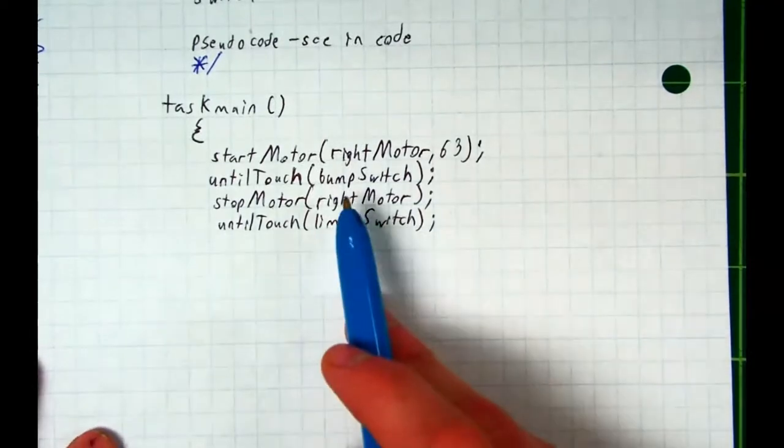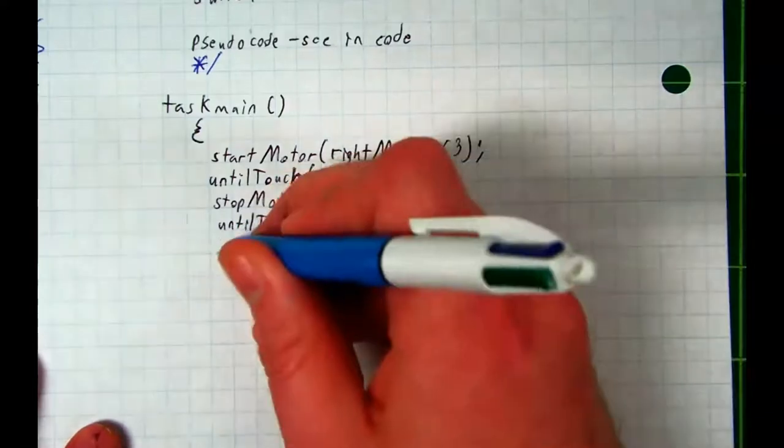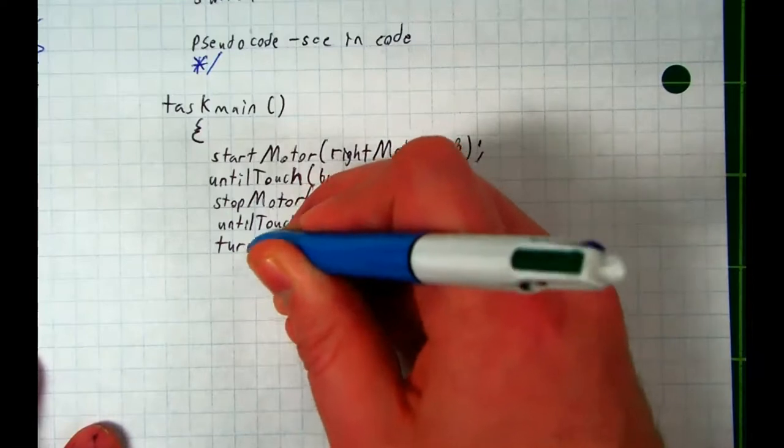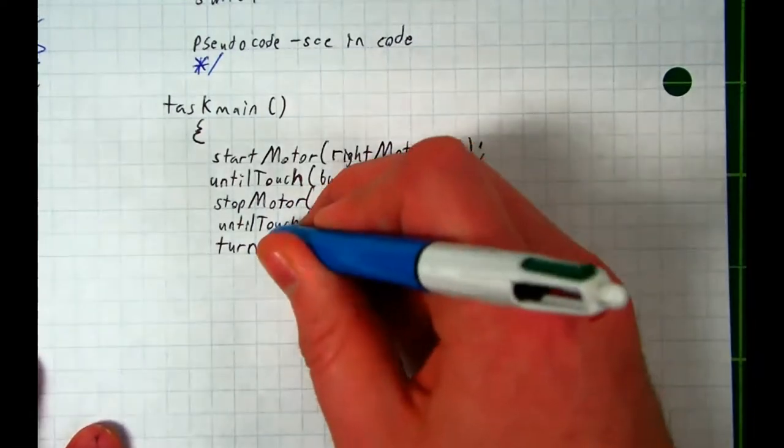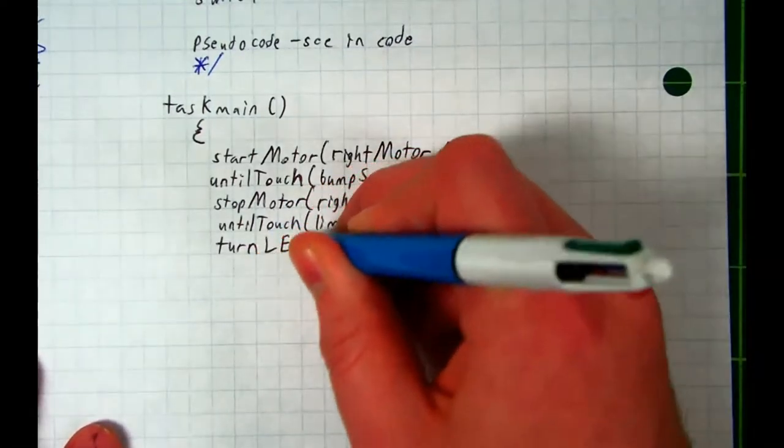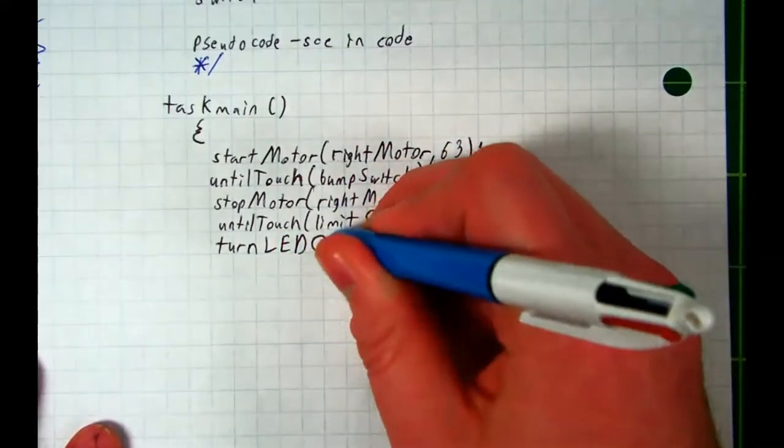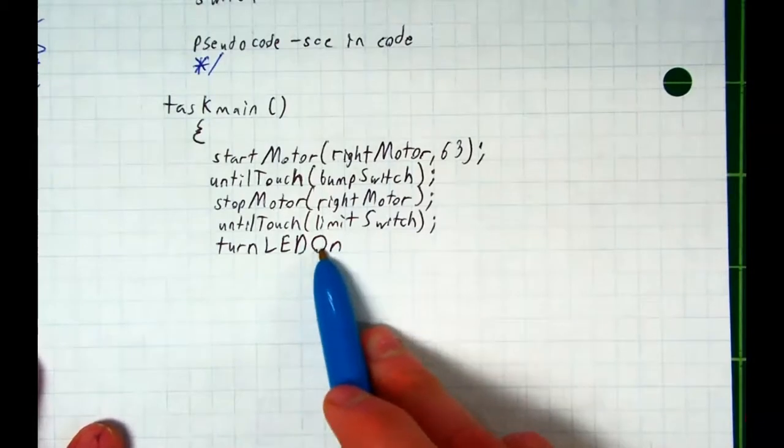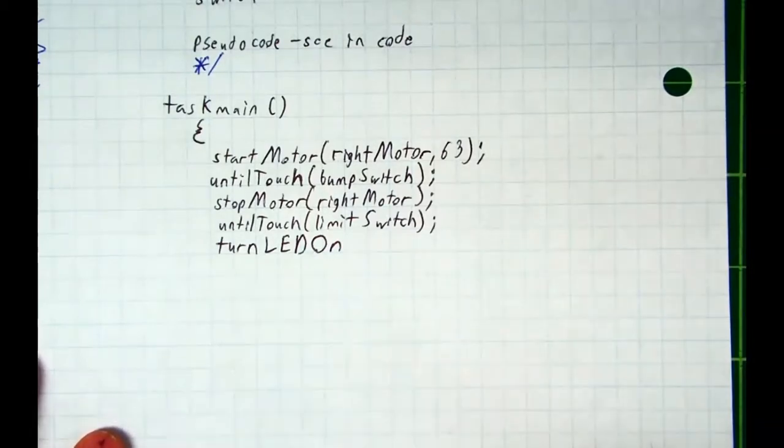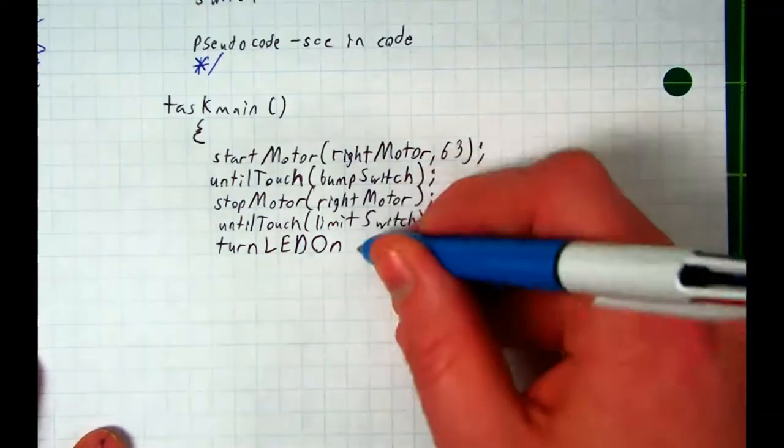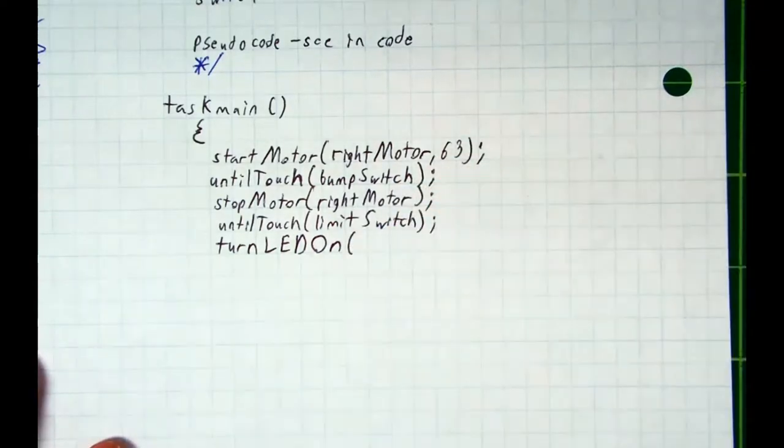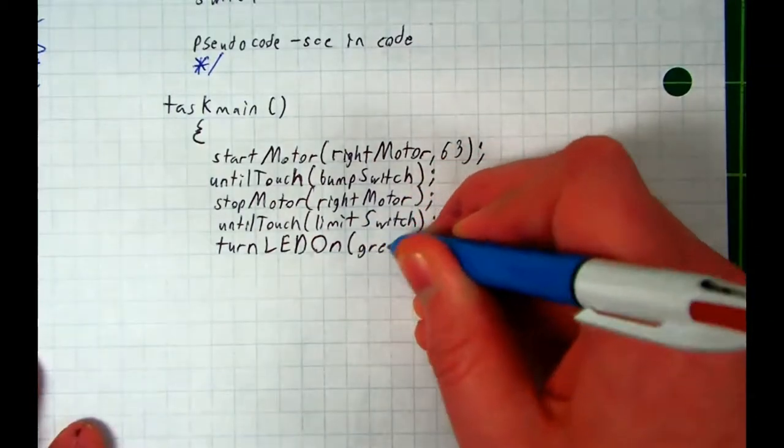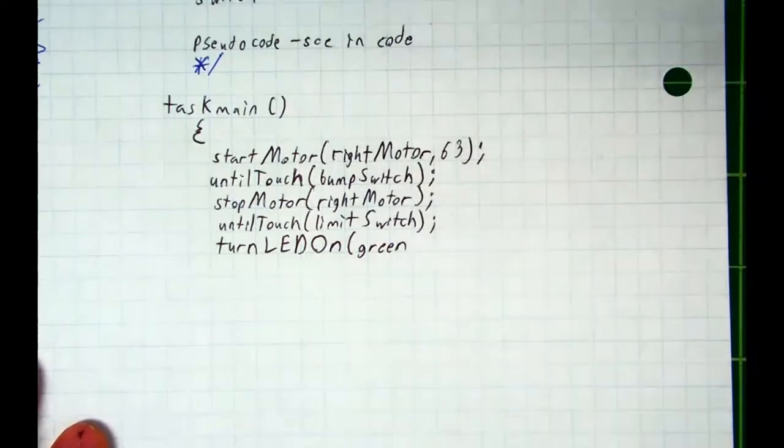And once we hit that limit switch, what do we do? Turn on the LED. And that's literally how it's written—lowercase T, turnLEDOn, uppercase O, again no spaces. I apologize if my D and O look a little similar. TurnLEDOn, and we have to designate what the LED is. What is a standard LED? Green. If you put in a red LED and you wrote red, I wouldn't get mad at you as long as you know you're using red. And then add that semicolon.